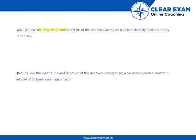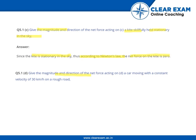Give the magnitude and direction of the net force acting on a kite skillfully held stationary in the sky. Since the kite is stationary in the sky, according to Newton's law, the net force on the kite is zero.